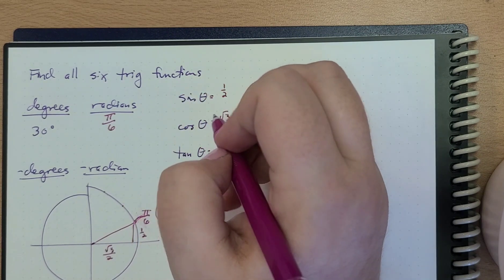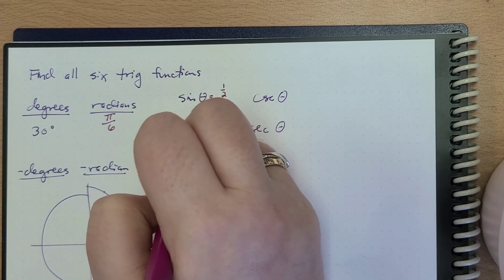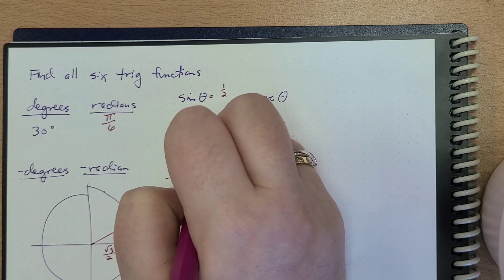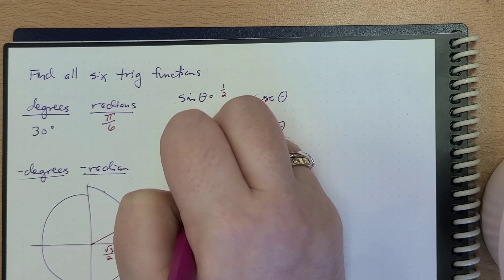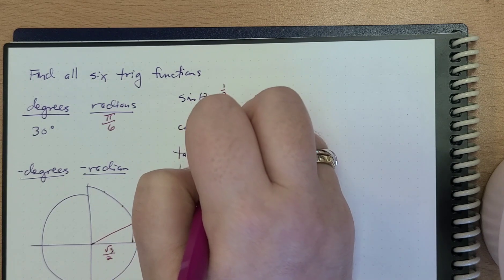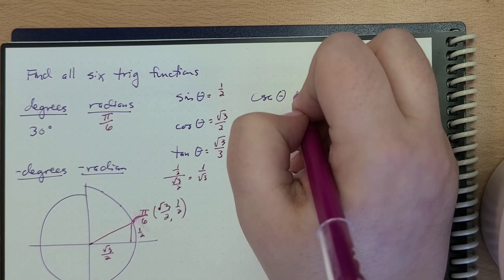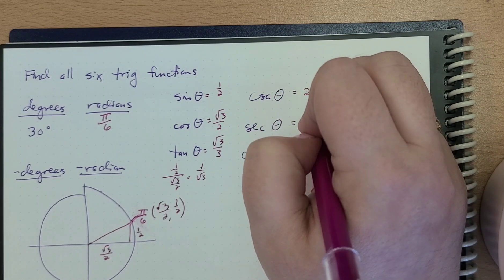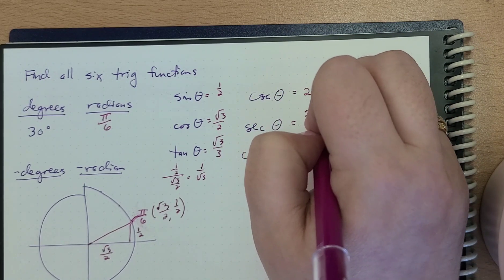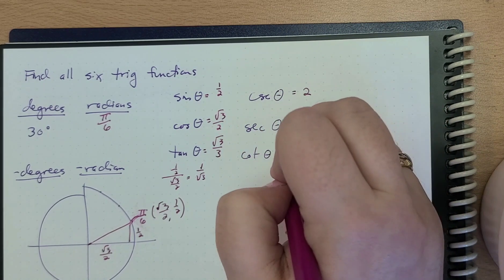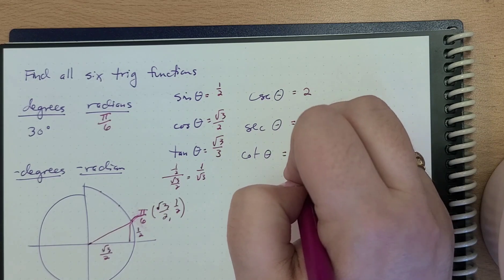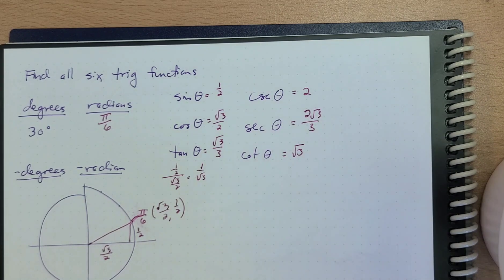Tangent is going to be equal to one half over √3/2 — those are going to cancel out, so that's √3/3. Cosecant is two. Secant is going to end up being 2√3/3. And cotangent is going to end up just being √3.